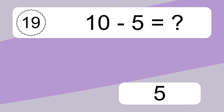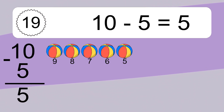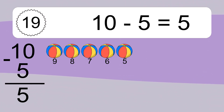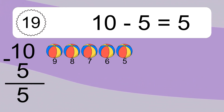10 minus 5 equals what? 10 minus 5 equals 5. Let's count it: 10, 9, 8, 7, 6, 5.